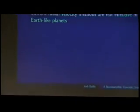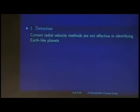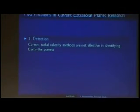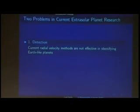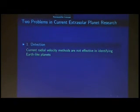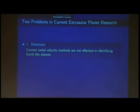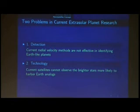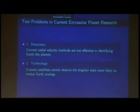We've discussed detection issues that occur when trying to find Earth-like analogs and introduced transit light curve analysis, leveraging the unique intrinsic geometry and mathematical expressions we can derive as sources of information for planets and stars. Now let's turn to the technological issues, because current satellites are not effective in finding the Earth-like analogs that we desire.